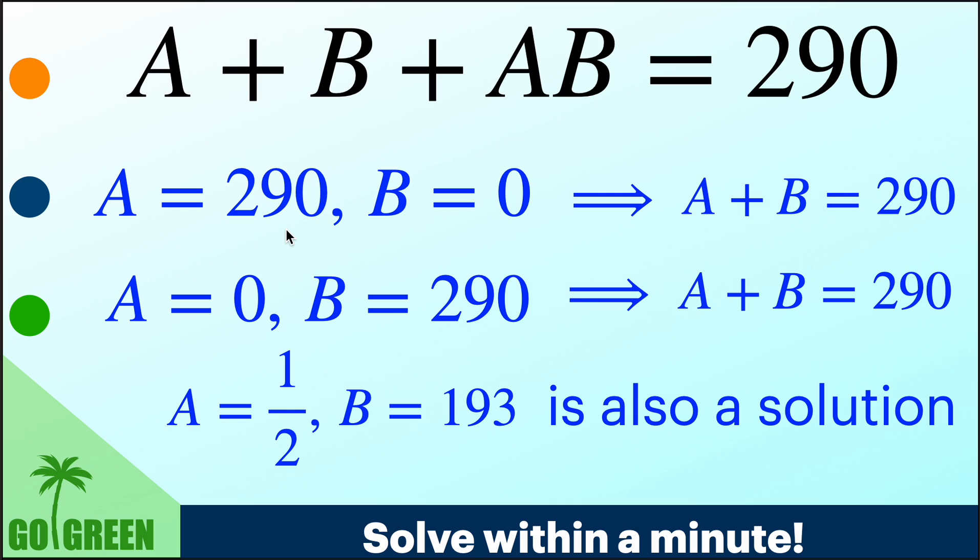Secondly, and similarly, A equal to 0, B equal to 290 is not acceptable again because A equal to 0 is not a natural number, for the same reason.